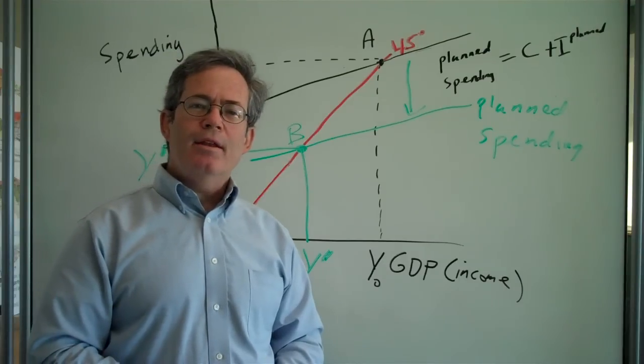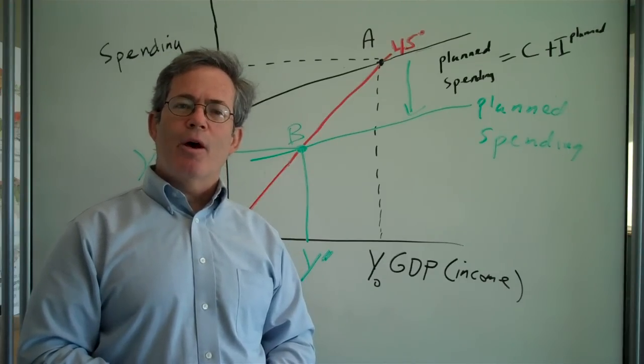And that's where we add something else to our national income account model, government spending.